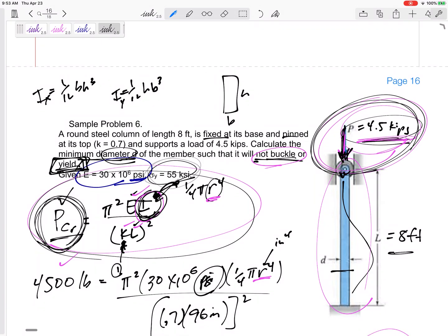Make sure it doesn't yield first. When might it yield first? For a smaller length, a shorter and fatter beam that it might yield before it will buckle.